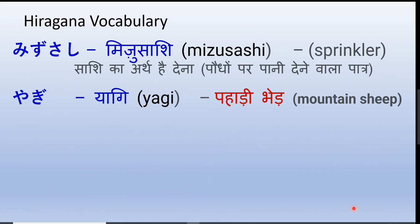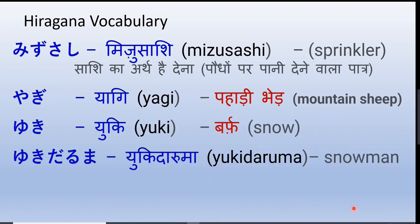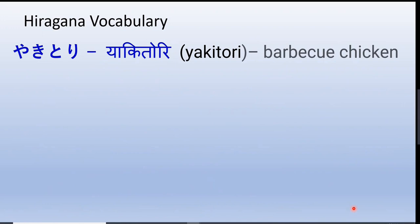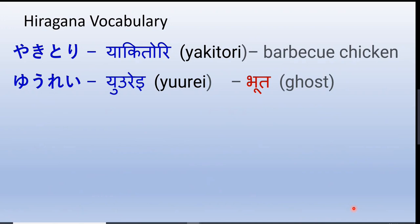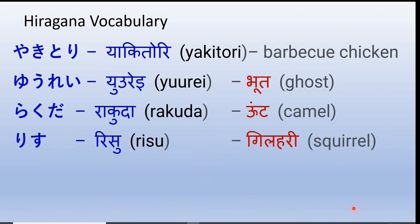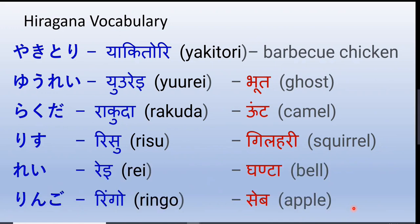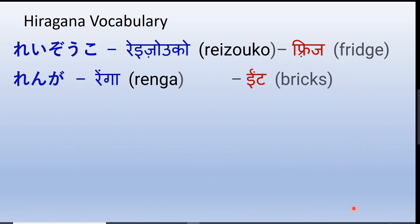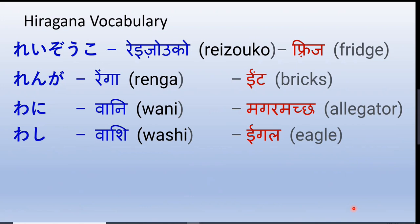Yagi — mountain goat. Yuki — snow. Yukidaruma — snowman: yuki means snow and daruma means man, so yukidaruma is the snowman children make during Christmas or New Year. Yon — the number four. Yasai — vegetables in general. Yakitori — barbecue chicken. Yurei — ghost. Rakuda — camel. Risu — squirrel. Rei — bell. Ringo — apple. Reizouko — refrigerator or fridge. Renga — bricks. Wani — alligator. Washi — eagle.